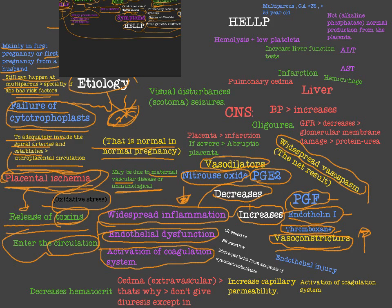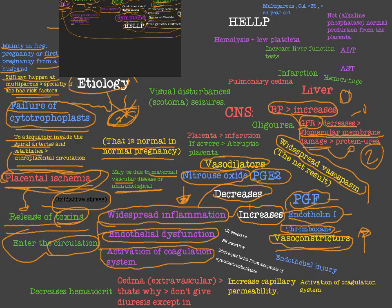Widespread vasospasm leads to hypertension — the first sign of preeclampsia. Additionally, vasospasm of the renal arteries decreases the glomerular filtration rate, causing glomerular membrane damage. This glomerular membrane damage leads to proteinuria, which is the second characteristic sign of preeclampsia.